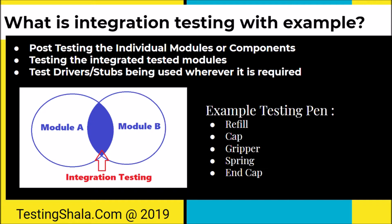Let's take a simple example: testing a pen. A pen is an end product. The individual components in a pen are the refill, cap, gripper, spring, and end cap. Each component is tested separately as a module — the refill is tested separately, the cap is tested separately, the gripper is tested separately, and the spring and cap are also tested as individual components. Now we need to assemble these modules together to form a bigger module — the pen itself.